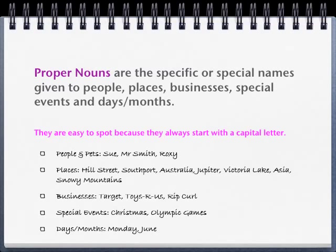Places: Hill Street, Southport, Australia, Jupiter, Victoria Lake, Asia, Snowy Mountains. Businesses such as Target, Toys R Us, Rip Curl. Special events such as Christmas and the Olympic Games, and days and months of the year.